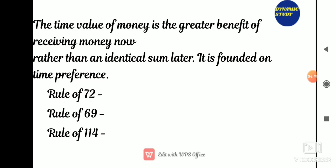There is another rule: Rule 114. This rule is used to estimate how long it takes to triple your money. In Rule 72 and 69 we are measuring the doubling period, but in Rule 114 we are measuring the tripling period. To estimate how long it takes to triple your money, divide 114 by your expected interest rate or rate of return.